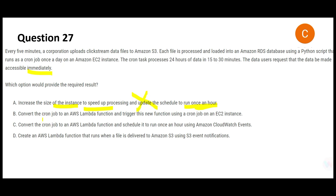Option B says convert the cron job to a Lambda function and trigger it using a cron job on an EC2 instance. How will that solve the performance issue? Whether you activate it via a cron job or a Lambda function, the triggering mechanism doesn't matter. Just switching scheduling tools doesn't improve performance — there has to be something substantive done to improve it. So B is wrong.